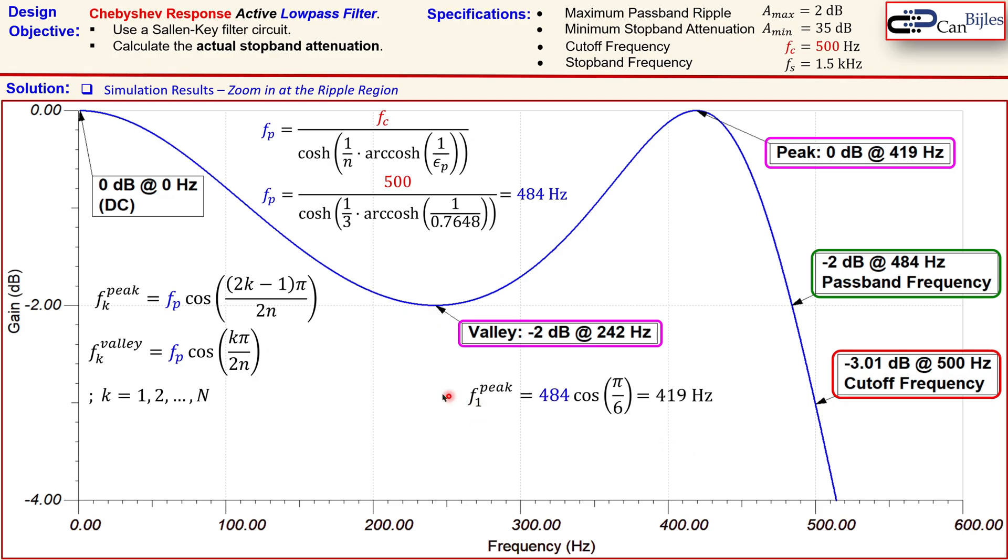So, for K is 1, you substitute here in this formula, K is 1, that means then 2 times 1, minus 1 will be, of course, 1, times pi, and over 2 times N. Now, that means 2 times 3 will be 6 here.